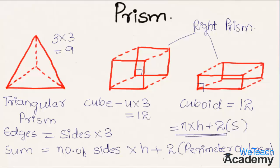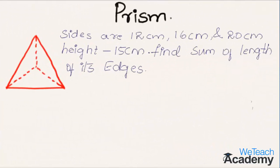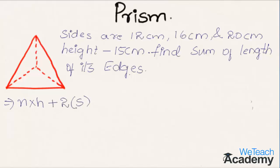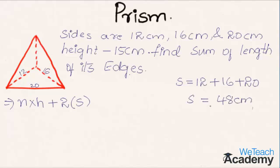Here is an example: if the sides of the base of a triangular prism are 12 cm, 16 cm, and 20 cm, and the height is 15 cm, find the sum of the lengths of its edges. Using the formula n × h + 2s, first we find the perimeter: s = 12 + 16 + 20 = 48 centimeters.